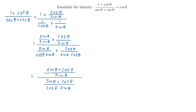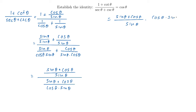Now we have one fraction divided by another fraction, so we need to do that division. The way you divide a fraction by another fraction is by multiplying by the reciprocal of the denominator. So that will be: sine theta plus cosine theta over sine theta, times the reciprocal of the denominator — cosine theta times sine theta divided by sine theta plus cosine theta.